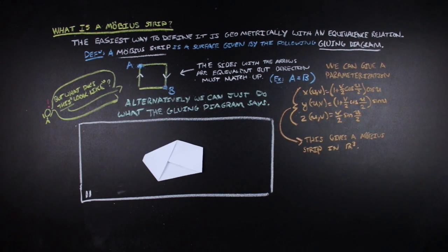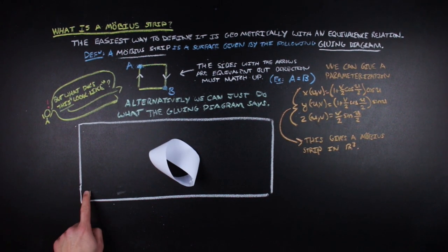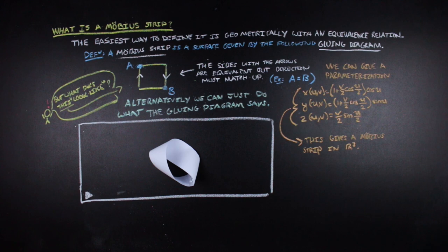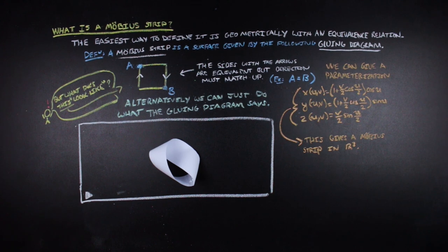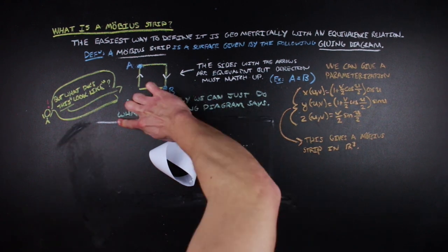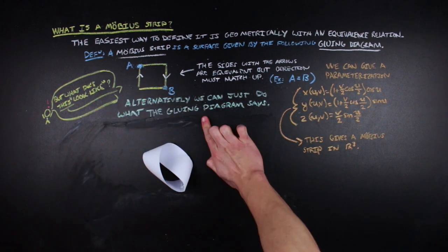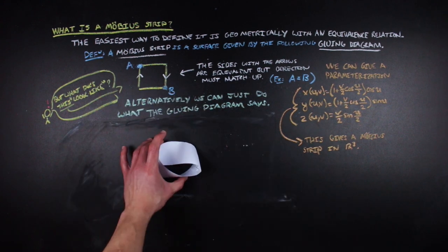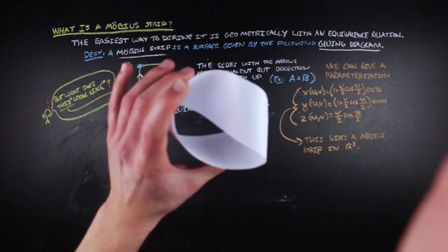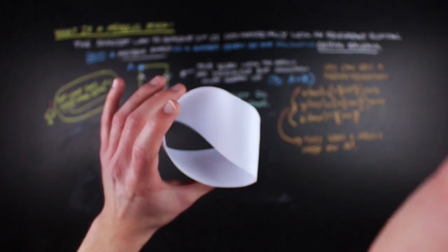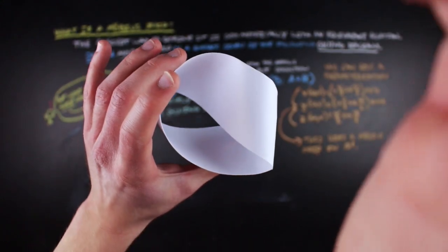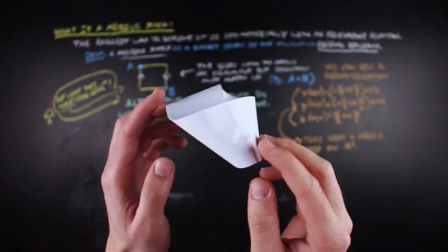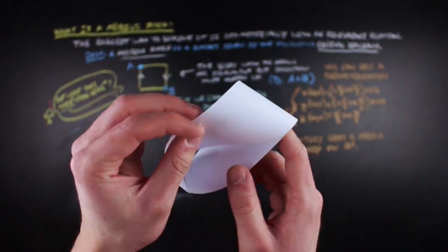After making the paper a little bit bigger and messing with it — getting that twist in there and gluing things together — we get this twisted shape, which is a representation of the Möbius band.